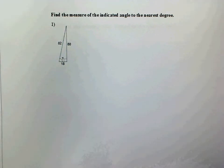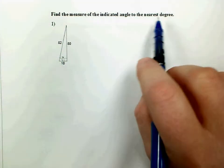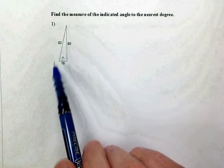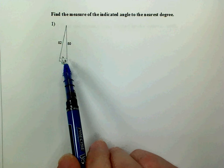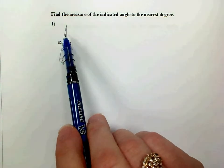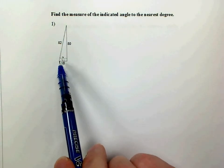On number one, it asks us to find the measure of the indicated angle to the nearest degree. So in this triangle, we have this right angle symbol that tells us that's a 90-degree angle, but we don't know this angle up here, and this is the one we want to know.